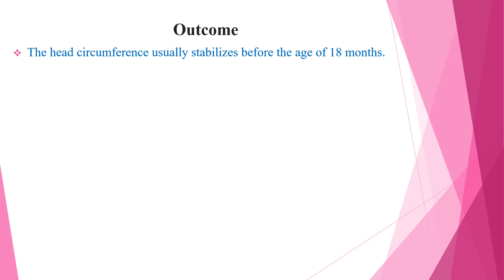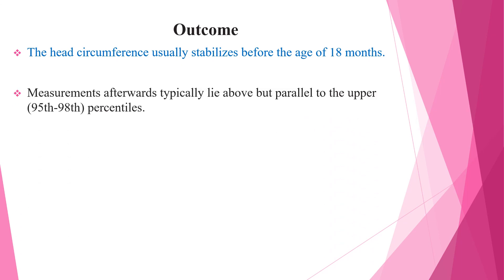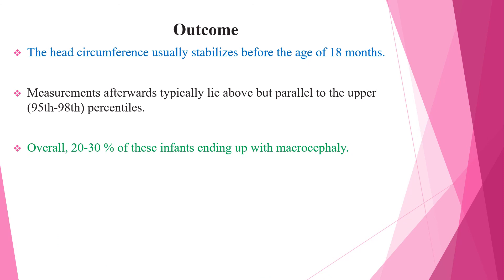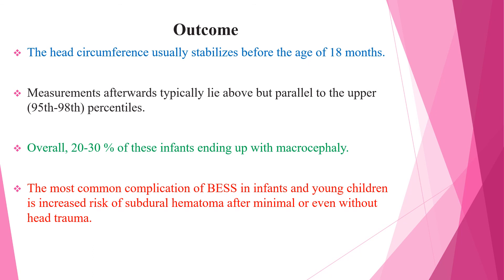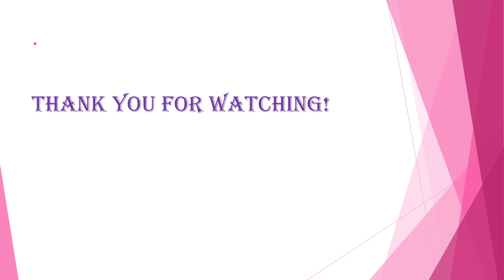When we see the outcome, the head circumference usually stabilizes before the age of 18 months, and measurements afterwards typically lie above but parallel to the upper percentiles. Overall, 20–30% of infants end up with macrocephaly. The most common complication of benign enlargement of subarachnoid space in infants and young children is increased risk of subdural hematoma after minimal or even without head trauma. This is all about benign enlargement of subarachnoid space in infancy. Thank you for watching.